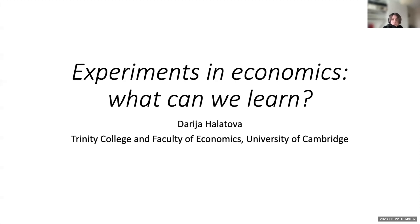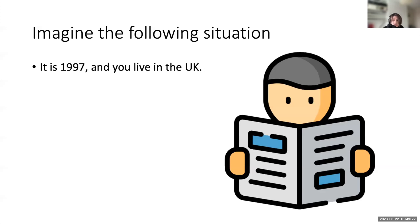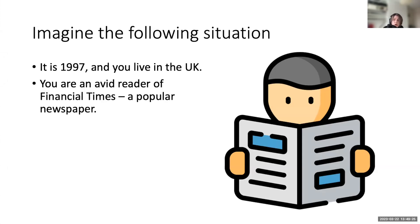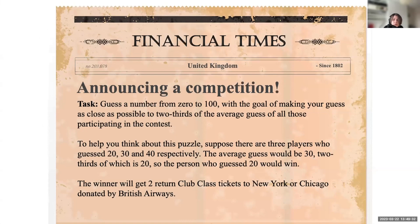I hope the topic will be new to most of you and hopefully fairly engaging. Let's start with the following situation. Imagine it's 1997, you live in the UK — we're still pretty much pre-digital and conventional newspapers are still very popular. You are an avid reader of the Financial Times. One day you open the newspaper and see an advert announcing a competition for a chance to win two return club-class tickets to New York or Chicago. To take part, you simply need to guess an integer from zero to one hundred.